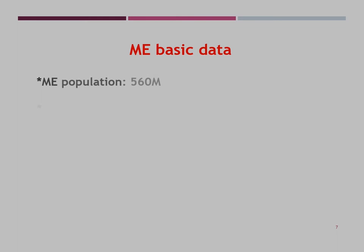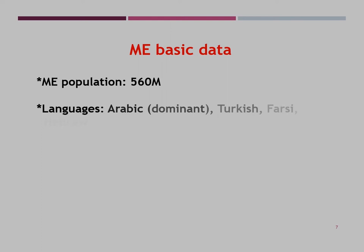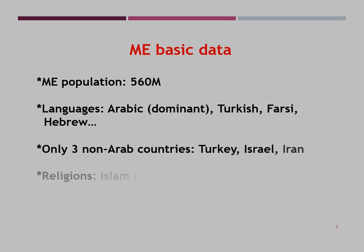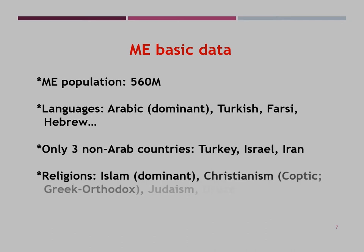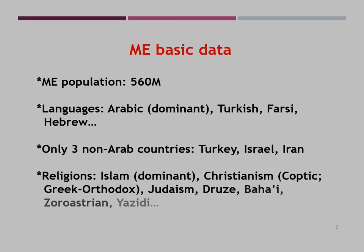Let's look into some basic Middle East statistical data. The Middle East population is approximately 560 million. Arabic is the dominant language, and there are only three non-Arab countries: Turkey, where the language is Turkish; Israel, where it is Hebrew; and Iran, where it is Farsi. Islam is numerically the biggest religion in the Middle East, though the majority of Muslims reside outside the Middle East, mainly in Indonesia, Pakistan, Bangladesh, Nigeria, and India. There are large concentrations of Christian sects in Egypt, particularly the Coptic Church, and in Syria and Lebanon, mainly the Greek Orthodox Church.